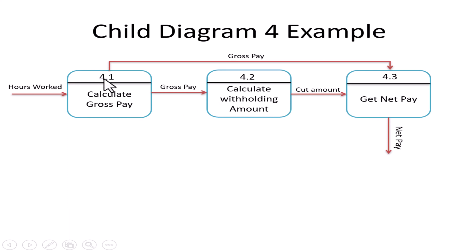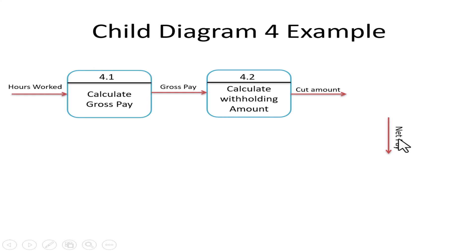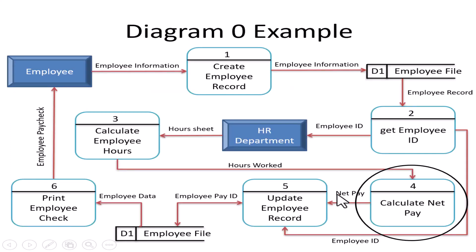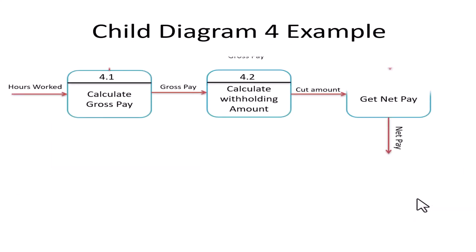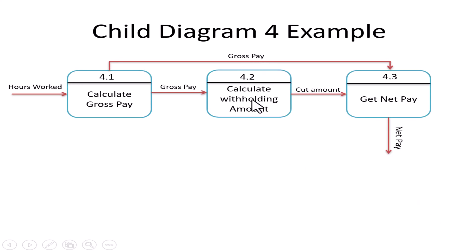For example, I made three children of process number 4: they are called 4.1, 4.2, and 4.3. The child diagram must also be balanced — the inputs and outputs must match the parent process. If I further expand process 4.2, its children would be numbered 4.2.1, 4.2.2, 4.2.3, and so on.